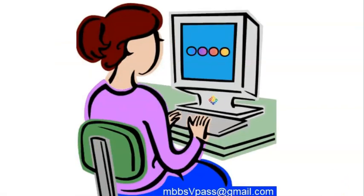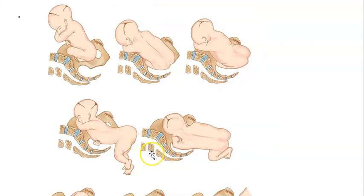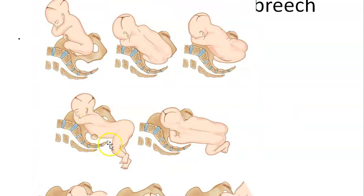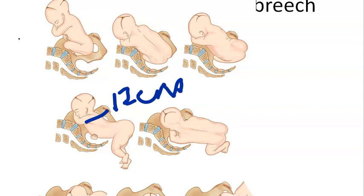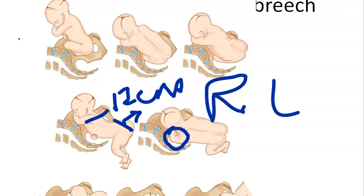Now let's move to the shoulder. The bisacromial diameter, which is 12 centimeters, is trying to come out. Descent occurs, then internal rotation. Delivery of the posterior shoulder happens first, followed by the anterior shoulder. Then restitution and external rotation occur.